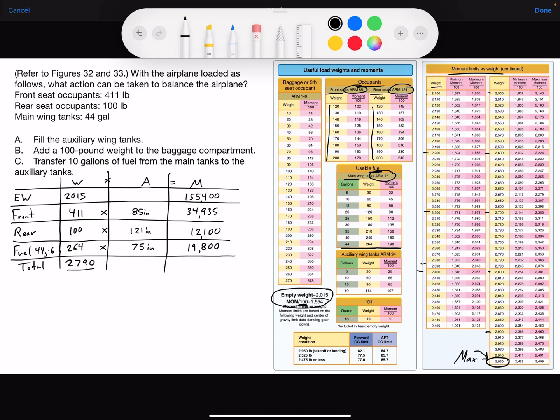If we total the moment, we get 222,235. And the moment in the table over here on the right, they give us a minimum moment and a maximum moment for a given weight. And the minimum is the forward limit. The max is the aft CG limit.